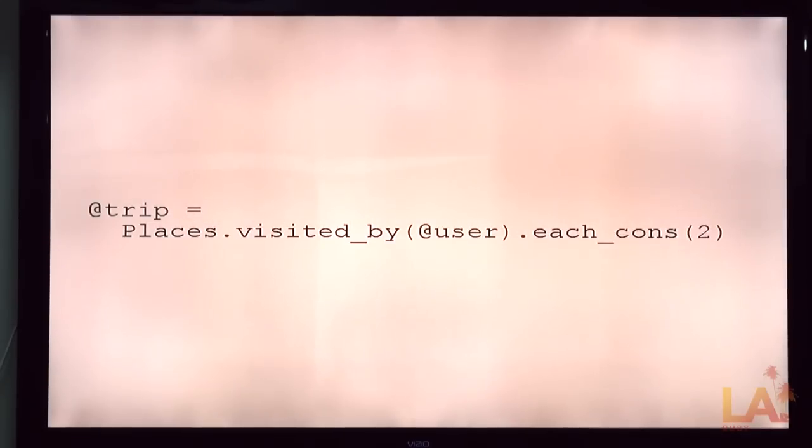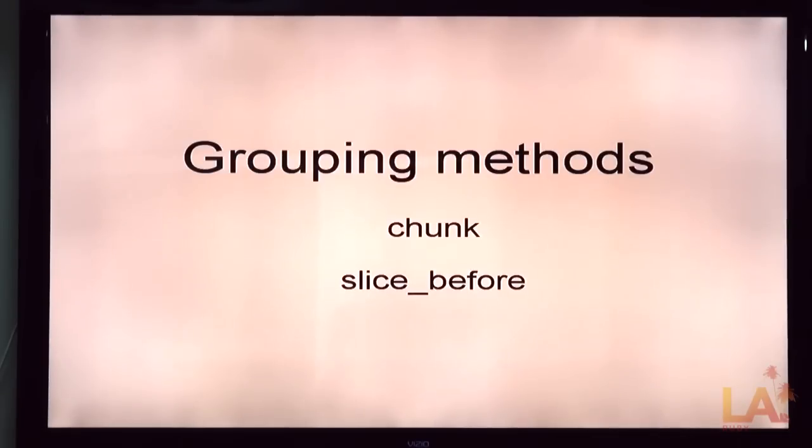So a couple of examples sort of bring this thing in, I hope. One is a Rails example. We imagine that there's a visited by scope that returns a list of locations that a user has been in in date consecutive order. We can take each cons, two, and now have basically their whole travel itinerary. Pass that into a view and say it went from LAX to Seattle, from Seattle to Moscow, from Moscow to New York, New York back to LA, LAX. And here are the distance traveled for each leg of that trip, for instance.